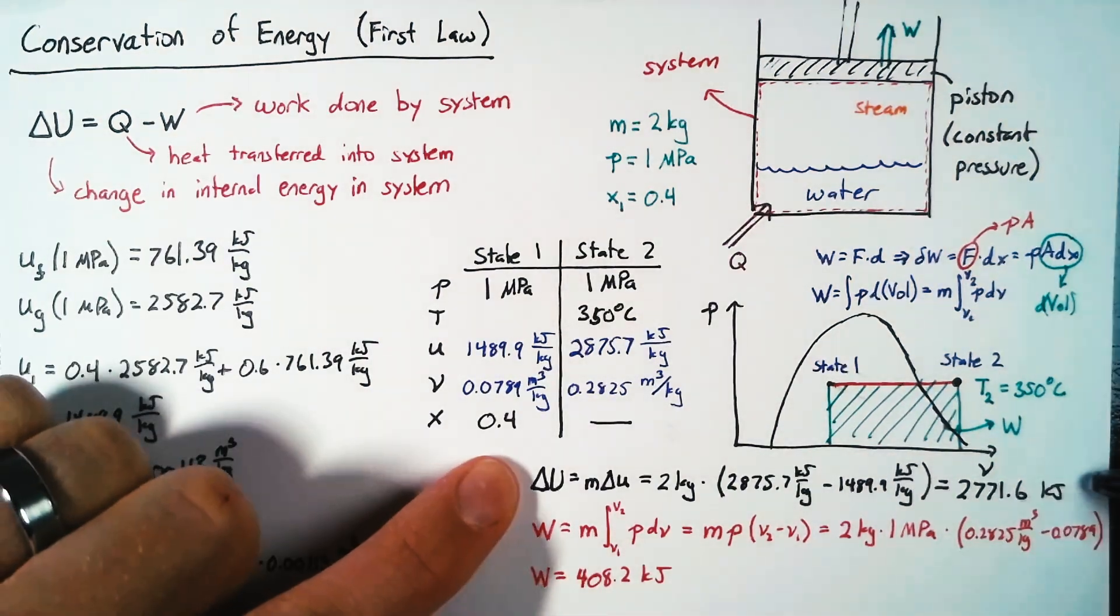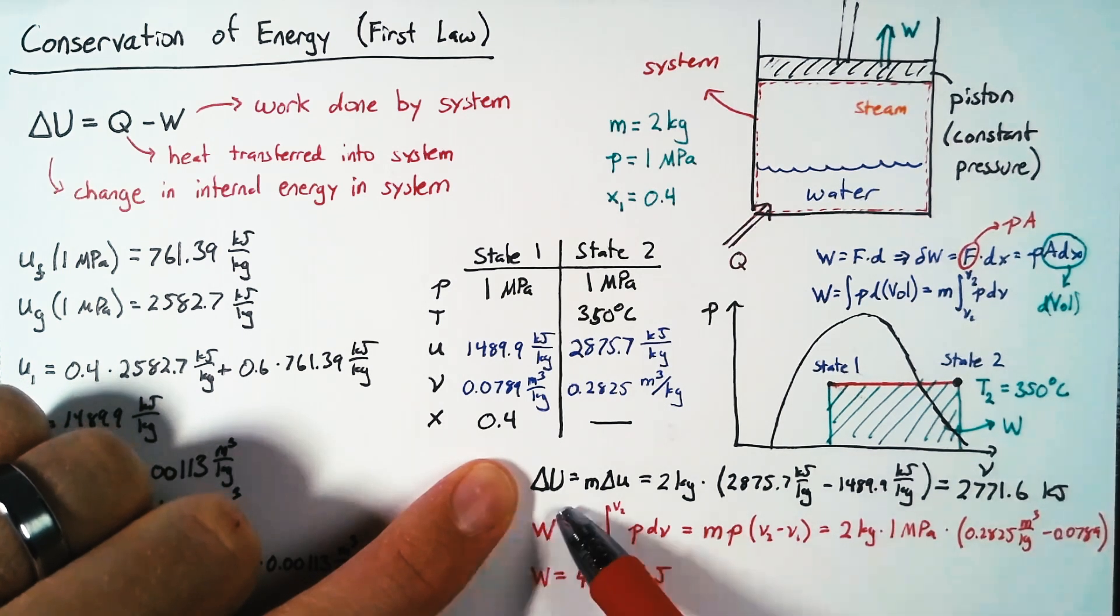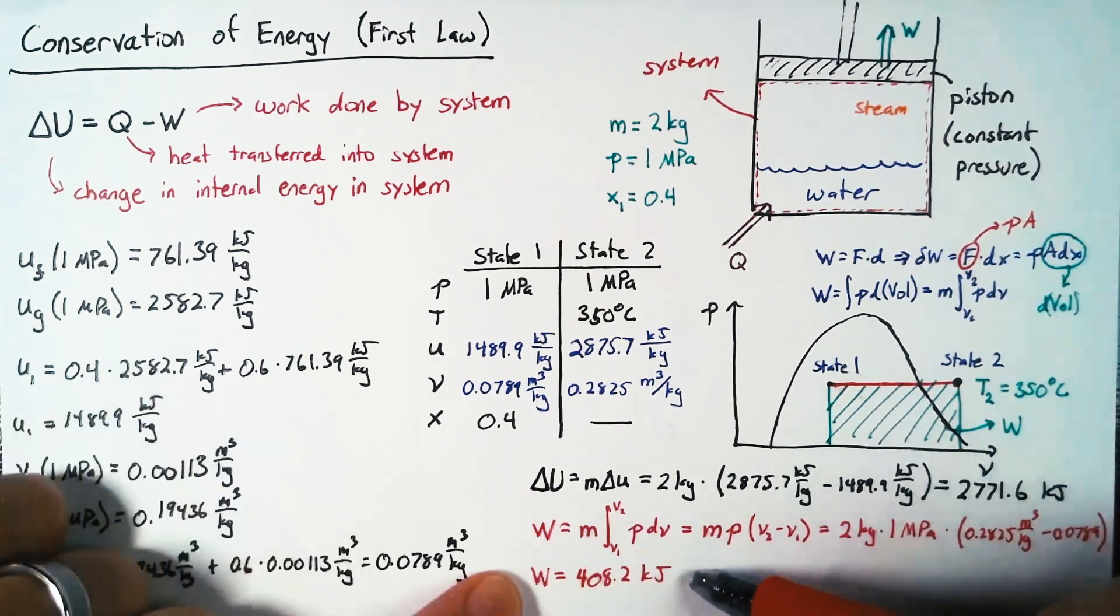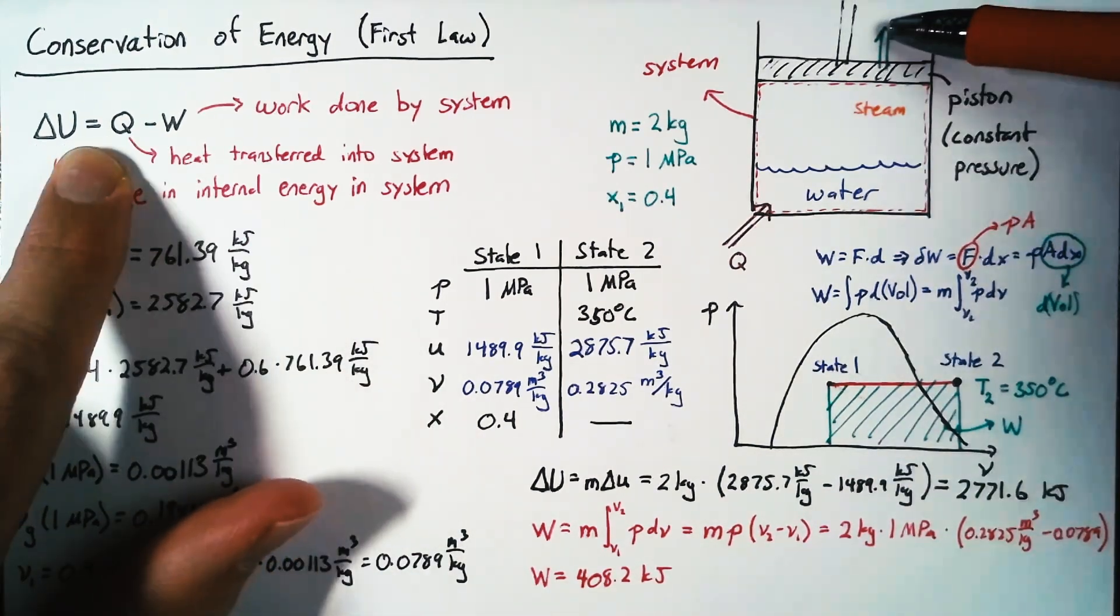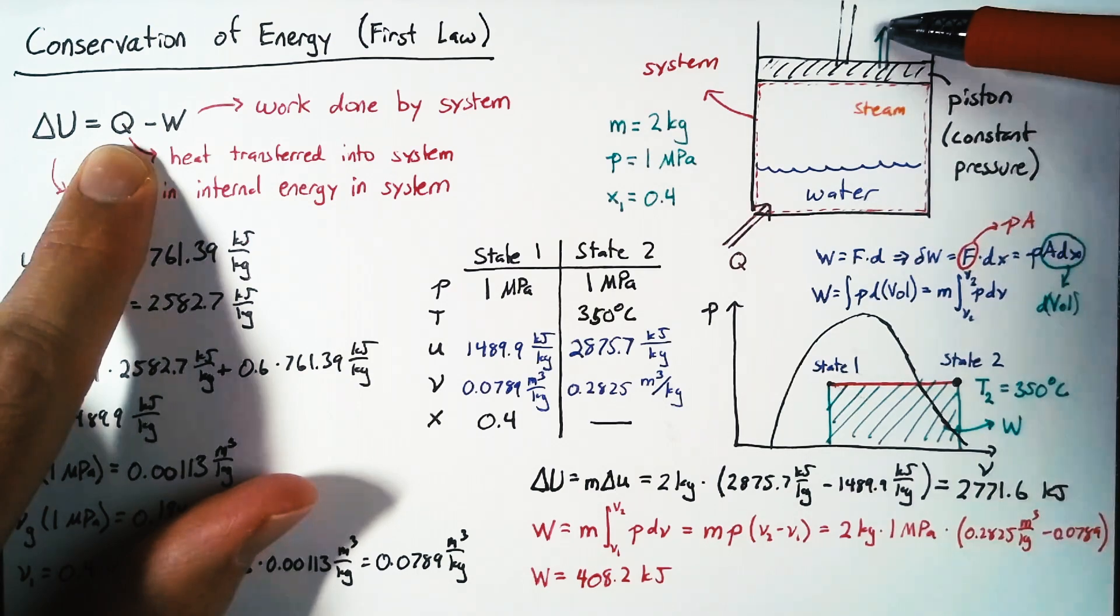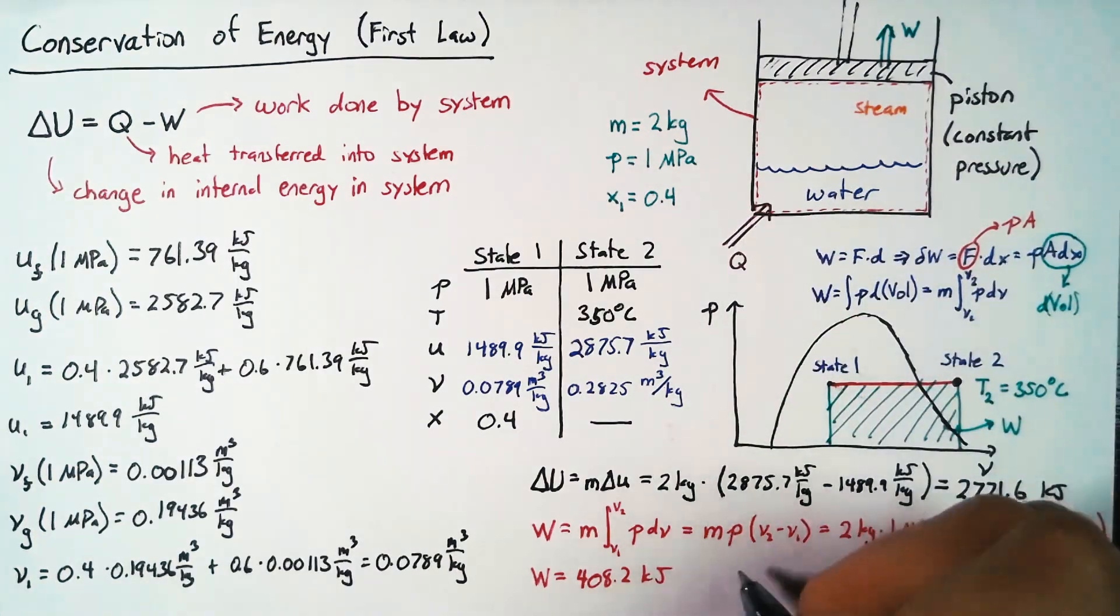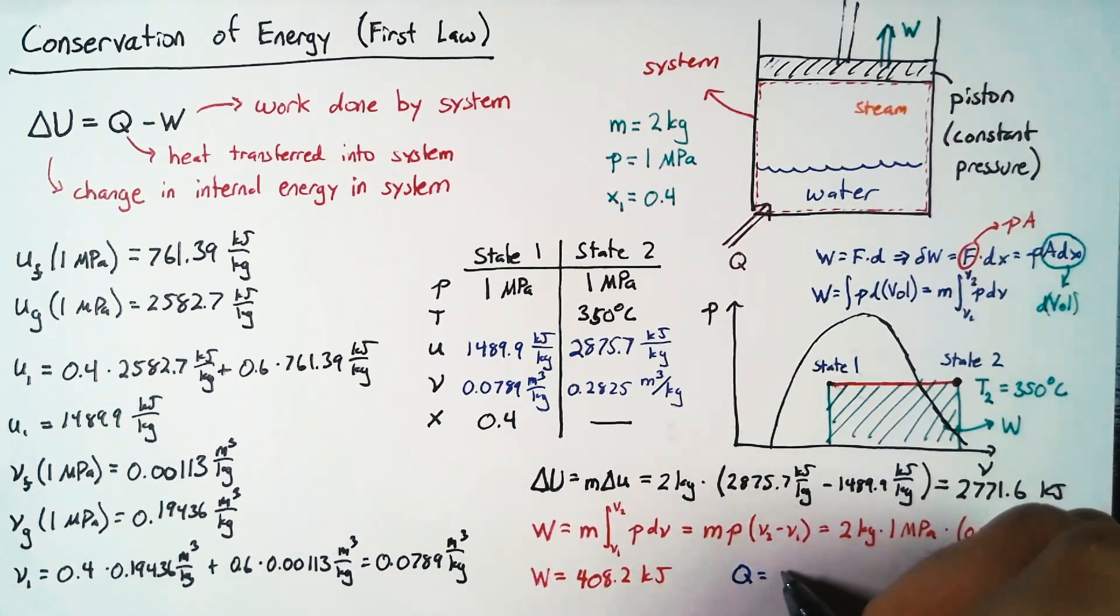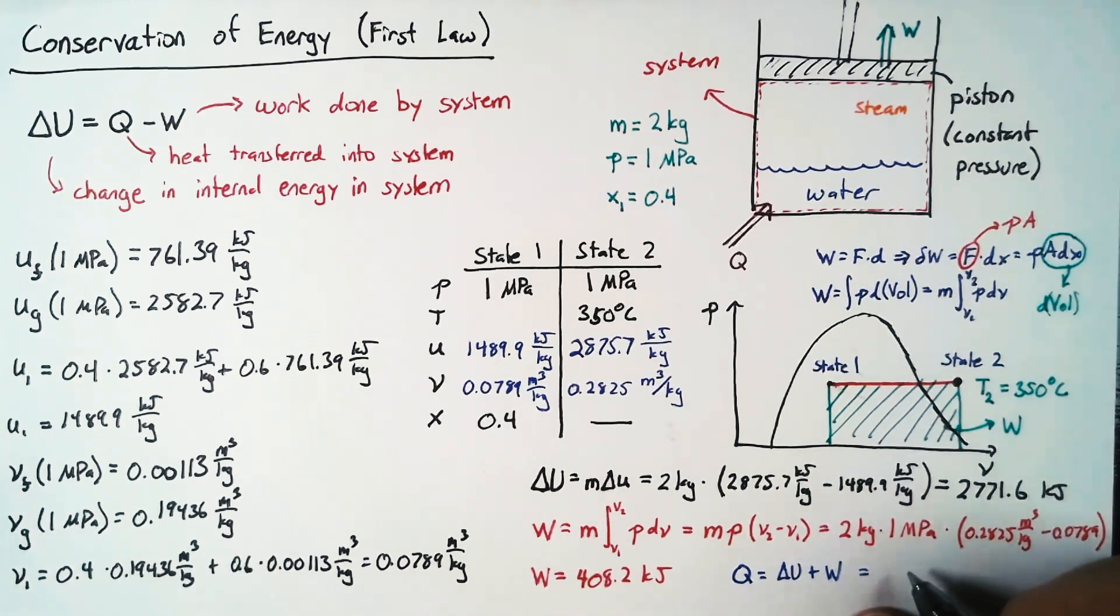So we know the amount of energy it takes to change the internal energy. We know the amount of energy that's leaving the system because of work. And with those two pieces, we're able to figure out what the total amount of heat transfer into the system had to be. So the last piece of the puzzle here is to say that Q is going to be equal to our delta U plus our W. And so that total value is going to be 3179.8 kilojoules.